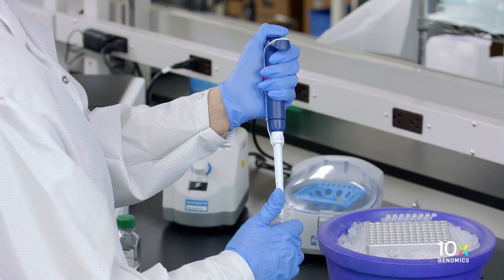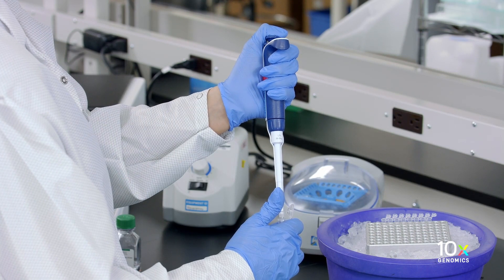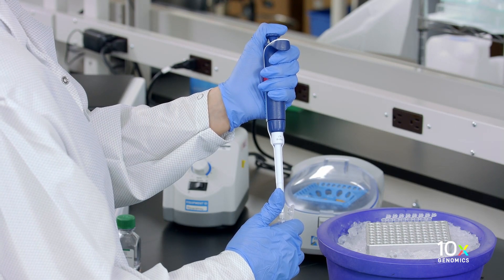Now we are ready to add the single cell suspension into our master mix. Gently pipet mix the single cell suspension before adding the appropriate volume into the master mix. Depending on the cell type the cells may settle down to the bottom of the tube.